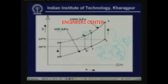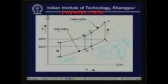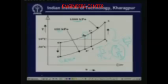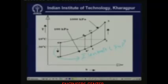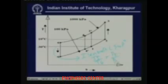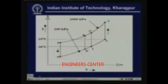Temperature at points 4 and 5 will be found using the effectiveness of the heat exchanger. For the isentropic expansion process 5 to 6, we write T5/T6 = (P5/P6)^((γ−1)/γ). P5 is 1000 kPa and P6 is 100 kPa, so the right-hand side is known. Once T5 is determined, T6 follows from this expression. This is how we find the different state points.